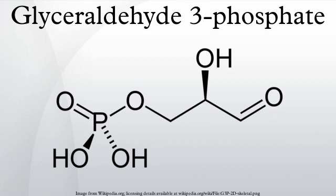Glyceraldehyde 3-phosphate, also known as triose phosphate or 3-phosphoglyceraldehyde, and abbreviated as G3P, GA3P, GADP, GAP, TP, GALP, or PGAL, is a chemical compound that occurs as an intermediate in several central metabolic pathways of all organisms.